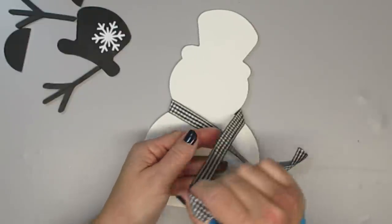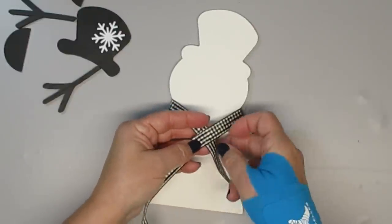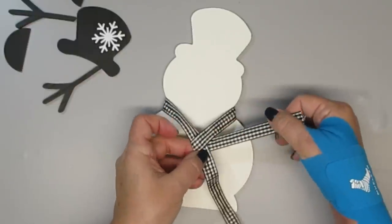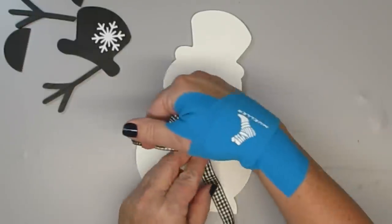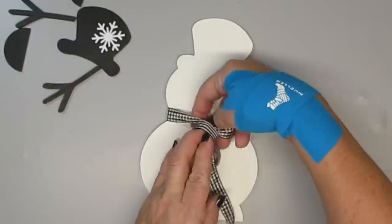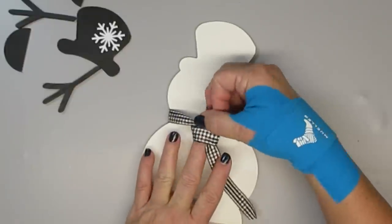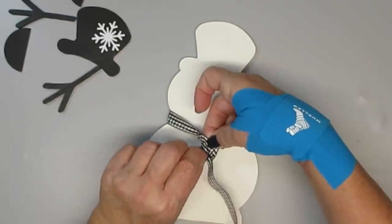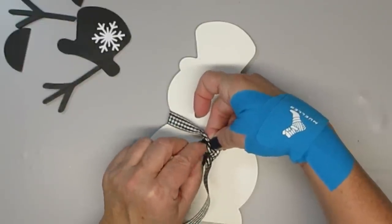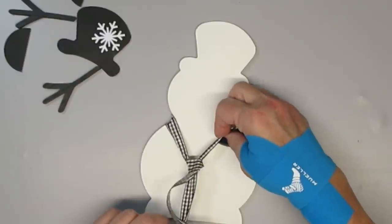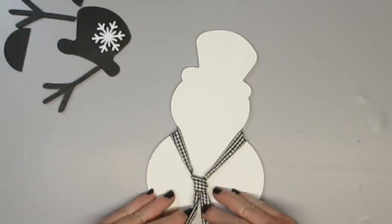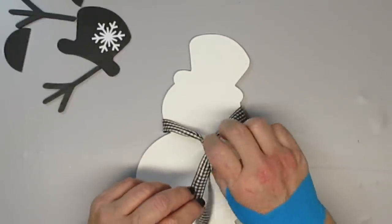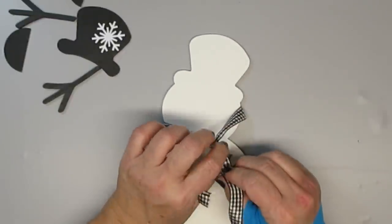I've got a length of buffalo check or gingham ribbon from the Dollar Tree and I'm going to give this guy a little necktie. That's what it looks like in the photo, it's not a bow or anything, so I'm going to just do my best at tying a little necktie and then I'll just straighten it out and get all of the lengths and everything figured out. This length of ribbon will also be part of the craft kit so you'll get everything you need to create this cute little snowman.